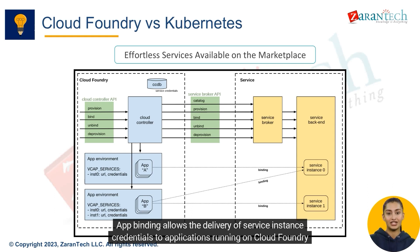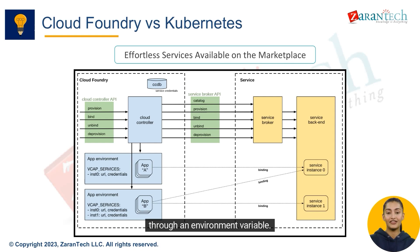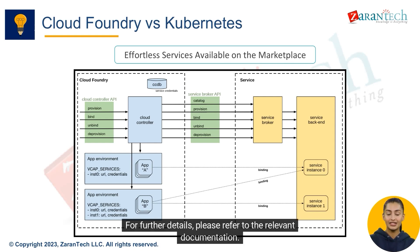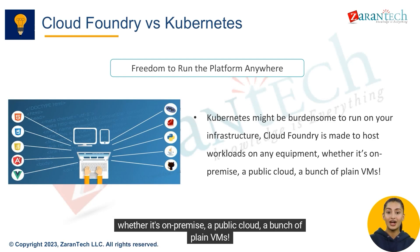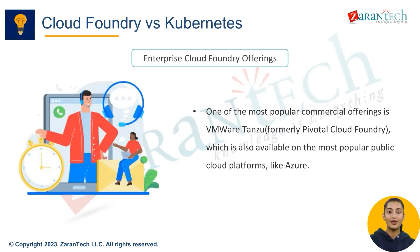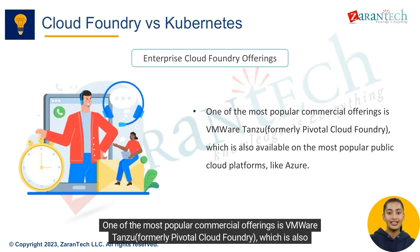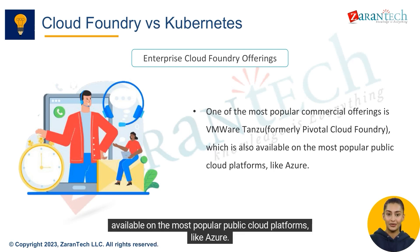App binding allows delivery of service instance credentials to applications running on Cloud Foundry through an environment variable. Kubernetes can be burdensome to run on your own infrastructure, whereas Cloud Foundry is designed to host workloads on any equipment — whether on-premise, a public cloud, or plain VMs. One of the most popular commercial offerings is VMware Tanzu, formerly Pivotal Cloud Foundry, which is available on major public cloud platforms like Azure.